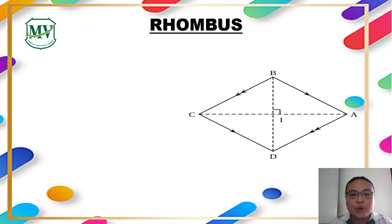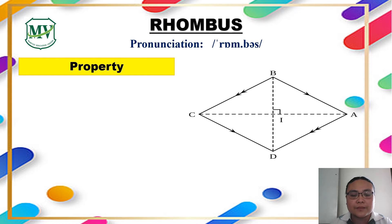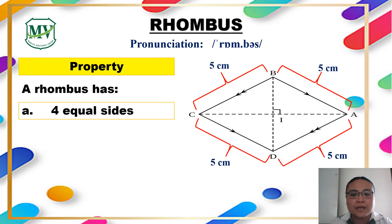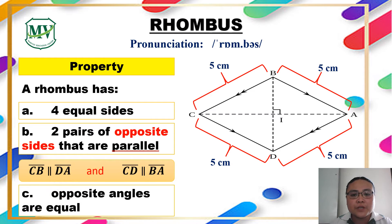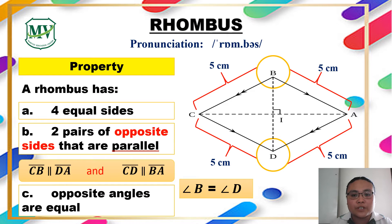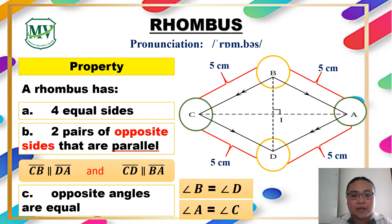Now we go to rhombus. What are the properties of a rhombus? Rhombus is the same as a square in terms of sides — all the sides of the rhombus are equal in length, and it also has two pairs of parallel sides. The difference between a square and a rhombus is the angles. A square has right angles, but a rhombus doesn't. However, the opposite angles of a rhombus are equal: angle B equals angle D, and angle A equals angle C.